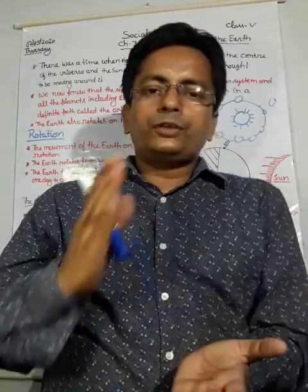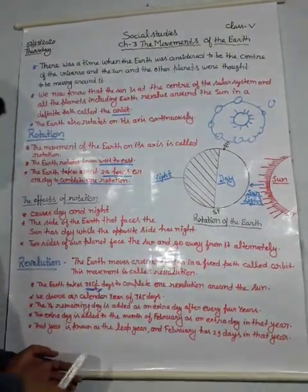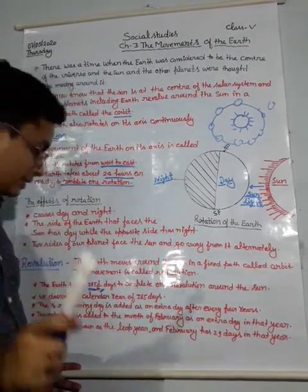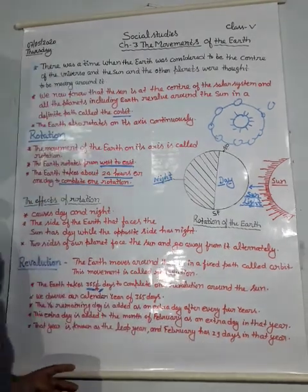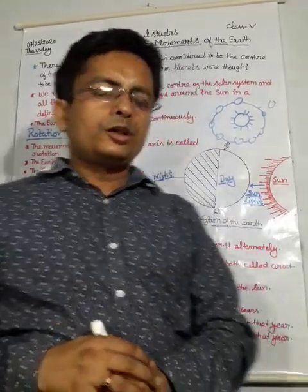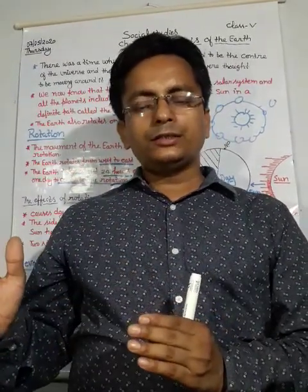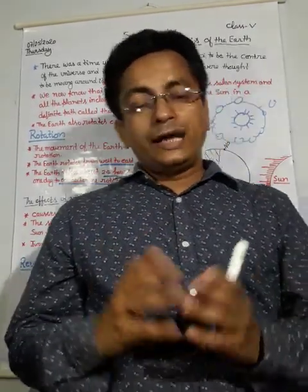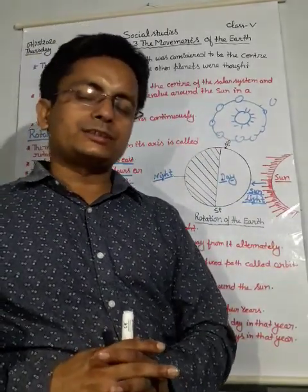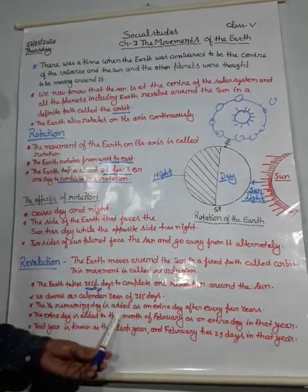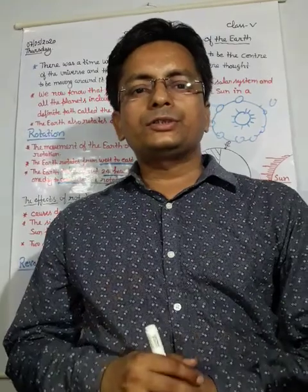After every four years, those one-fourth portions accumulate to make one full extra day, so that year has 366 days. That year is known as a leap year. In a leap year, February has 29 days instead of the usual 28, because the extra day is added to February.